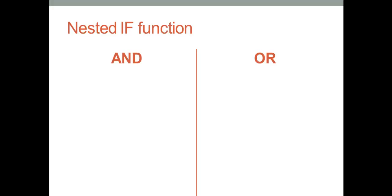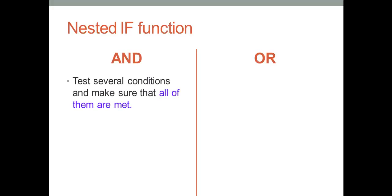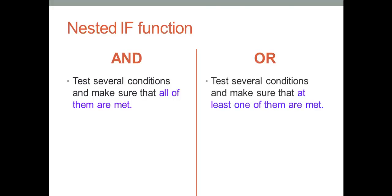We use the AND function to test against several conditions and make sure that all of these conditions are met. We usually use the OR function to test against several conditions and make sure that at least one of them is met. Both return either true or false when their arguments are evaluated.